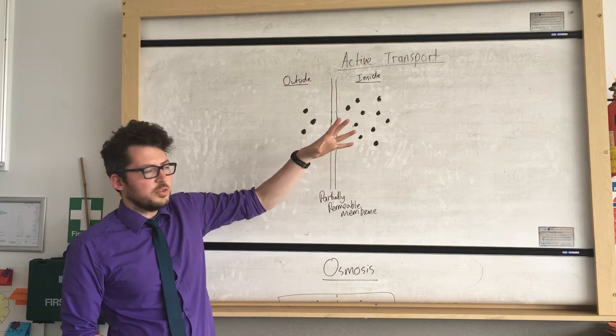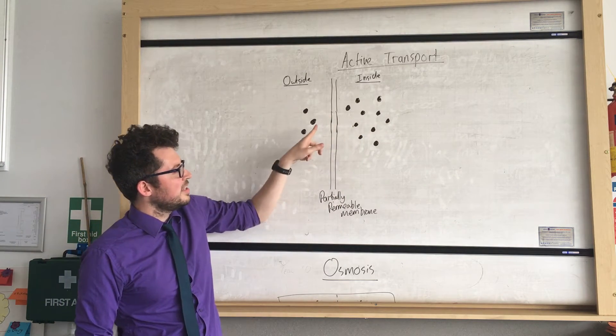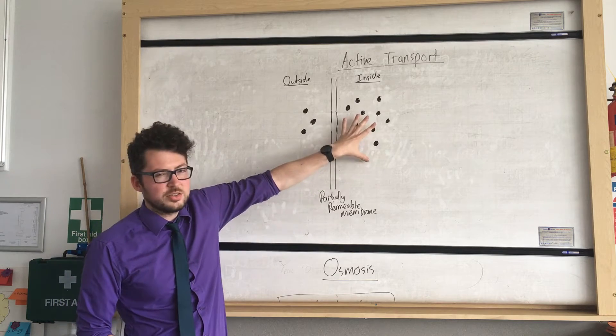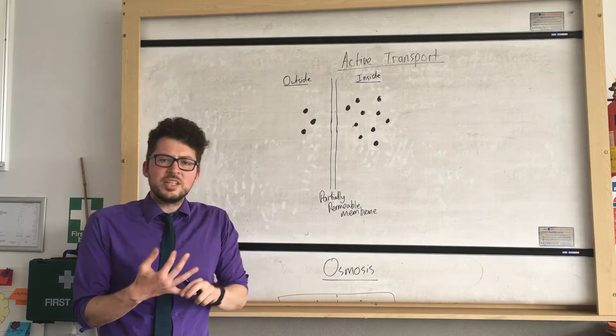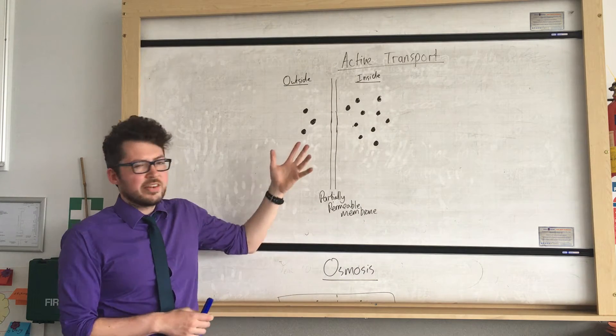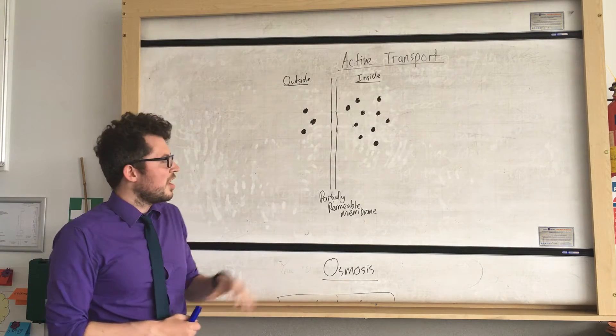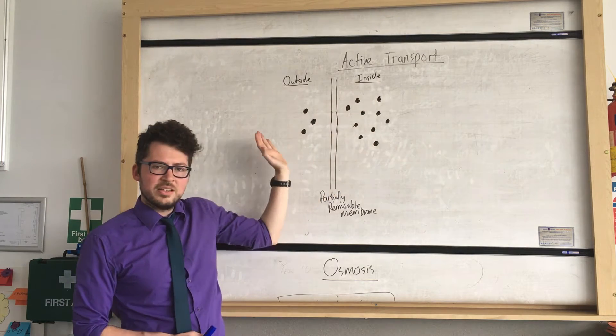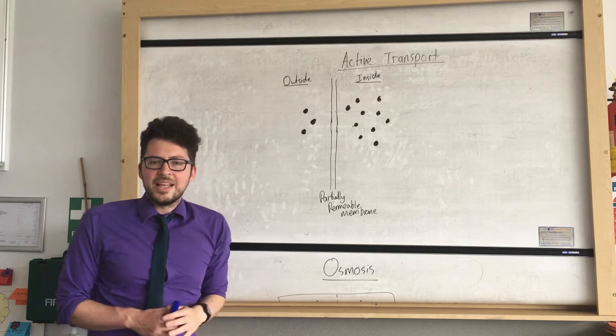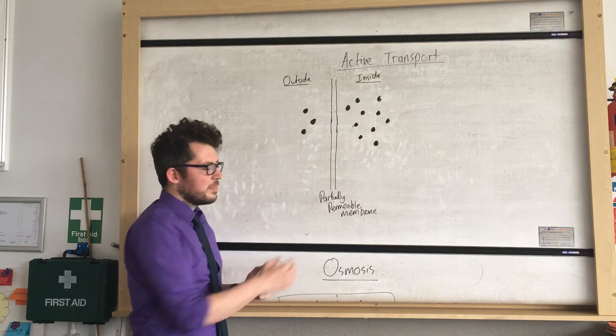So in this example, diffusion, the particles move from this side to this side because there's a higher concentration here than here. Now in this example, we're going to use an example of getting a material into our cells. So here's the material, these black dots. This side is inside the cell, this side is outside the cell. And they're separated by a partially permeable membrane.